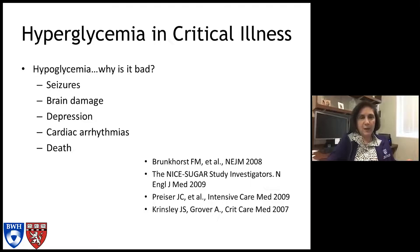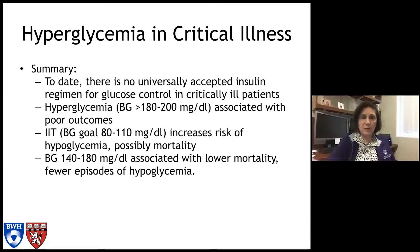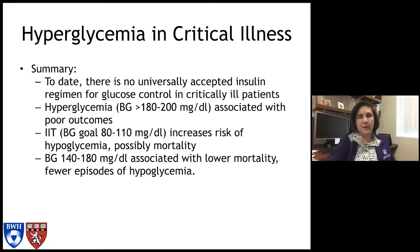Hypoglycemia is bad because it can lead to seizures, brain damage, depression, cardiac arrhythmias, and death. For now, there is no universally accepted insulin regimen for glucose control in critically ill patients. Hyperglycemia is associated with poor outcomes, and hypoglycemia is also associated with poor outcomes. Many of us recommend trying to keep the blood glucose between 140 and 180, which in all the studies is associated with lower mortality and fewer episodes of hypoglycemia. The best way to control blood glucose is likely a nurse-driven insulin protocol rather than determining insulin use at every blood glucose value independently.